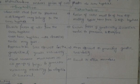Let us differentiate between homothalism and heterothalism. Homothalism is when cells that fuse to produce a dicarion may belong to the same hyphae. In case of heterothalism, the fusion of cells must be of two different mating types, hence from two different hyphae.